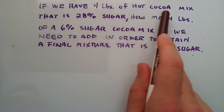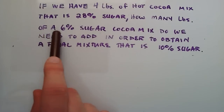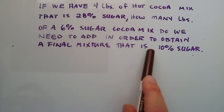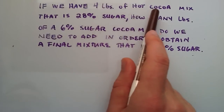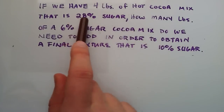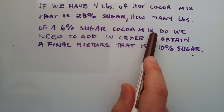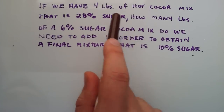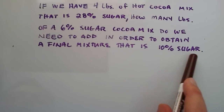If we have 4 pounds of hot cocoa mix that is 28% sugar, how many pounds of a 6% sugar cocoa mix do we need to add in order to obtain a final mixture that is 10% sugar? We know that we're starting out with 4 pounds of hot cocoa that is 28% sugar. How much of this second cocoa mix that is 6% sugar do we need to add to the first to obtain a final result that is 10% sugar?